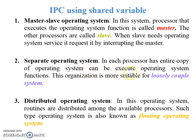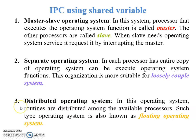In the separate operating system, each processor has an entire copy of the operating system and can execute OS functions. This organization is more suitable for loosely coupled systems, where each module has its own processor and local memory, so no conflict arises with shared variables. In the distributed operating system, routines are distributed among the available processors; this is also known as a floating operating system, and is very helpful in distributed applications.